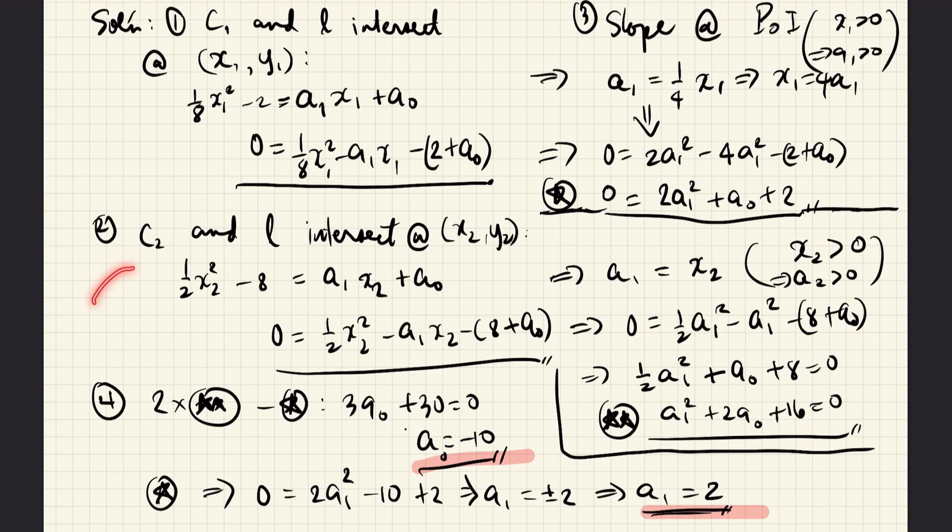We do a similar process for C2 and L. Again, we are interested in the point x2, y2, where C2 and L intersect. This is equal to y for the curve C2, and this is equal to y for the line L. That means that we can replace the x's and y's with x2 and y2. And because this is equal to y for the curve and this is also equal to y for the line, then these two expressions are also equal to each other at the point of tangency x2, y2. And so we are left with this equation, which can now be rearranged to give us this equation.